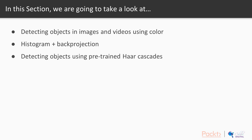To do this, we will be looking at a few concepts like histograms and back projection. The second method is more accurate as it is trained on particular objects which need to be detected. We will use something known as a Haar cascade classifier to detect objects of interest in an image or a video.